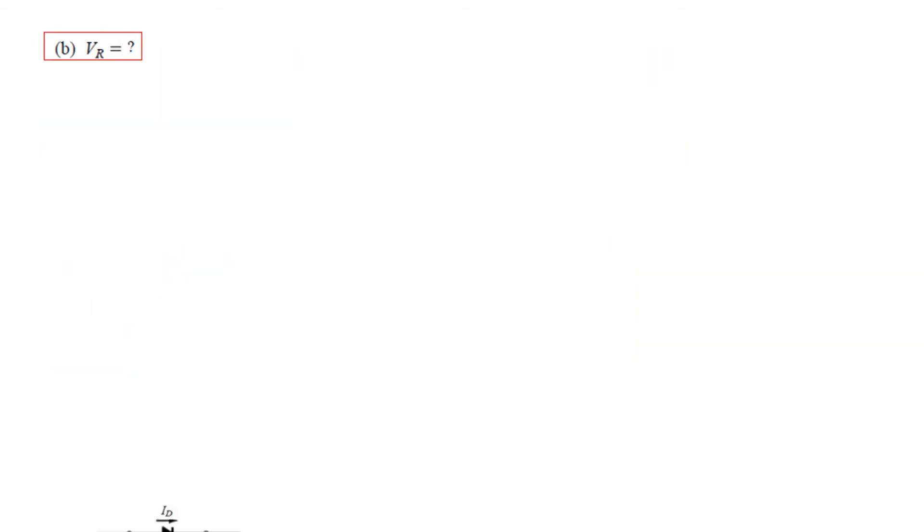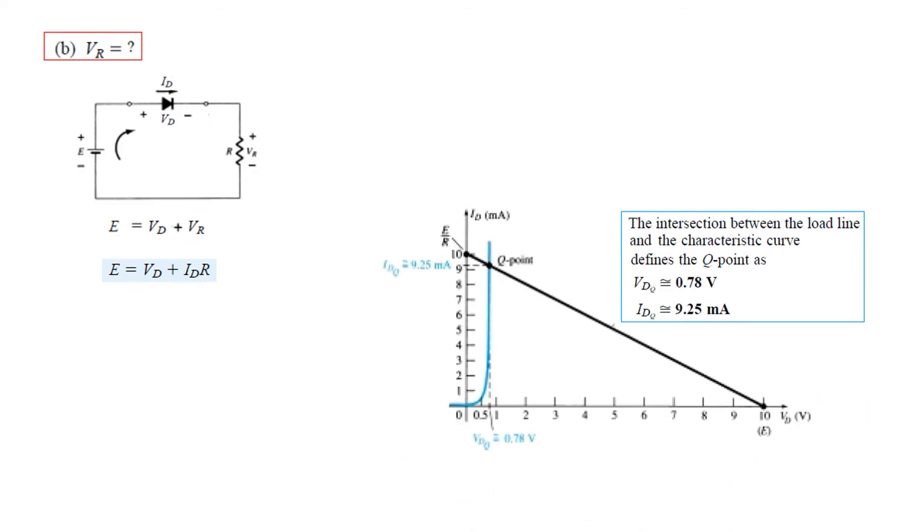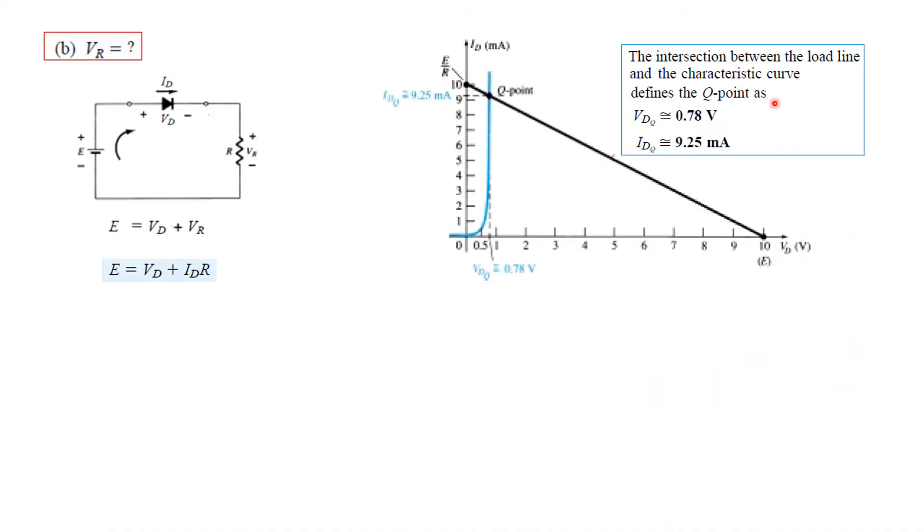The second part, we can use either of the two formulas. This is what we got. So we will use these values here to find Vr. Now Vr can be found as Vr is IdR. Id we know 9.25 milliampere IdQ multiply by 1 kilo R. So 9.25 volt is Vr.